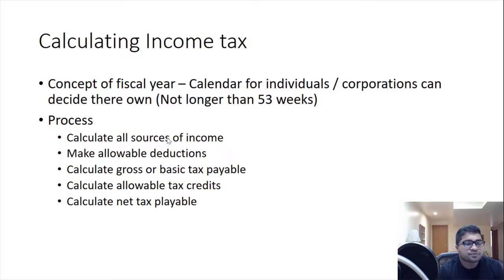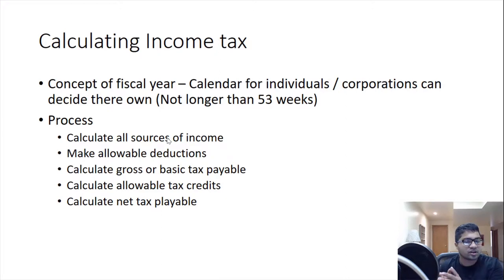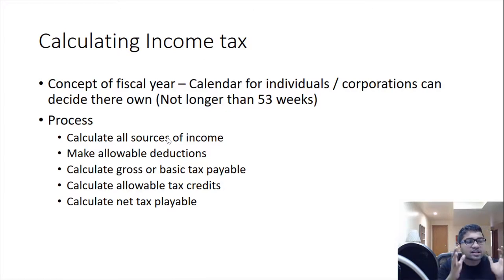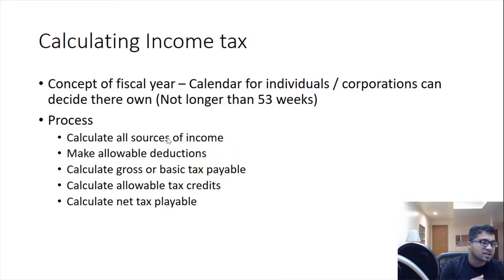The process for calculating income tax in Canada has five steps. First, calculate income from all sources — employment, business, and investments. Then take allowable deductions, such as dividend tax credits or RRSP contributions. Then calculate gross or basic tax payable, then calculate tax credits, and finally calculate net tax payable.